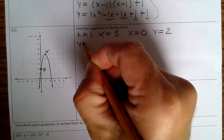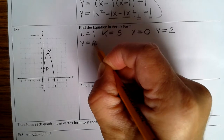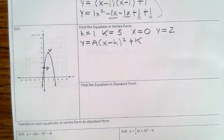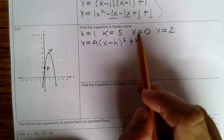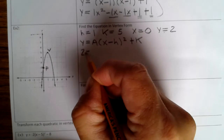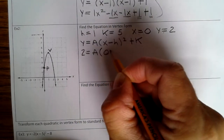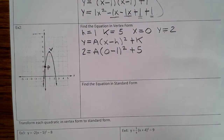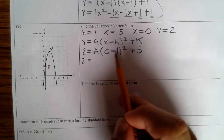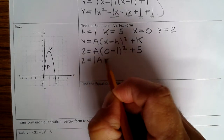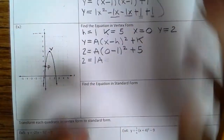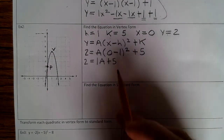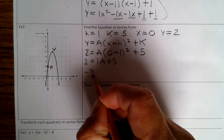So now we have the vertex form: y equals a(x minus h) squared plus k. We're going to substitute h, k, x, and y so we can solve for a. So y is 2: 2 equals a parentheses x is 0, minus h is 1, squared, plus k is 5. So then that's 2 equals — 0 minus 1 is negative 1, negative 1 squared is 1, so that's 1a plus 5. Subtract 5 from both sides: you get negative 3 equals a.